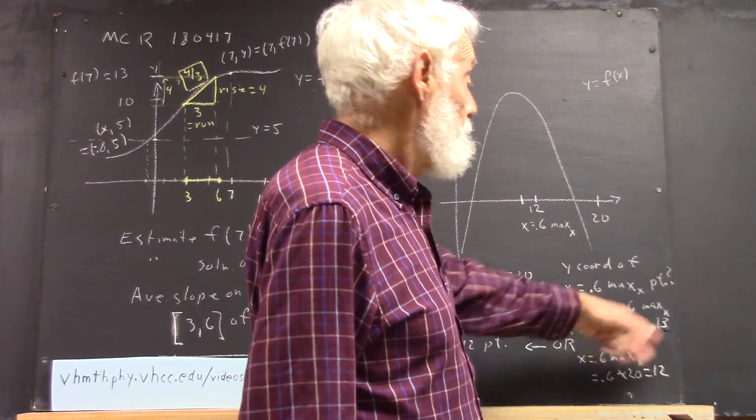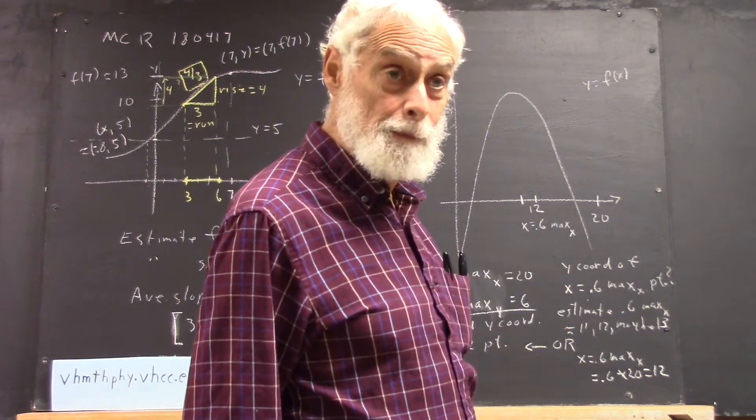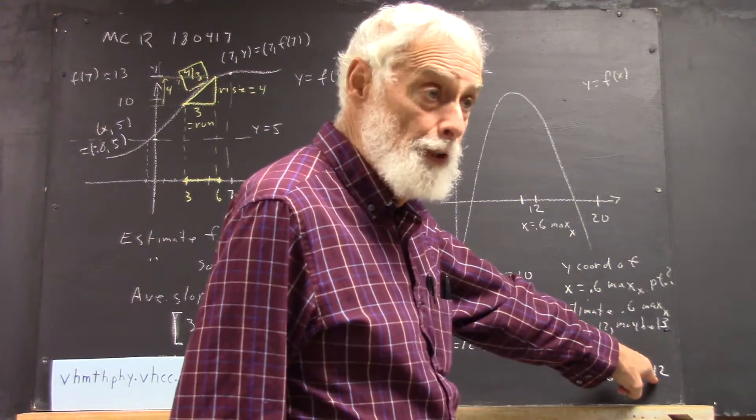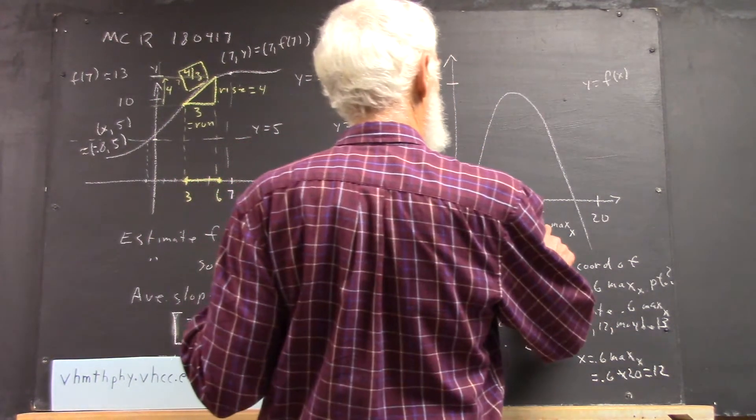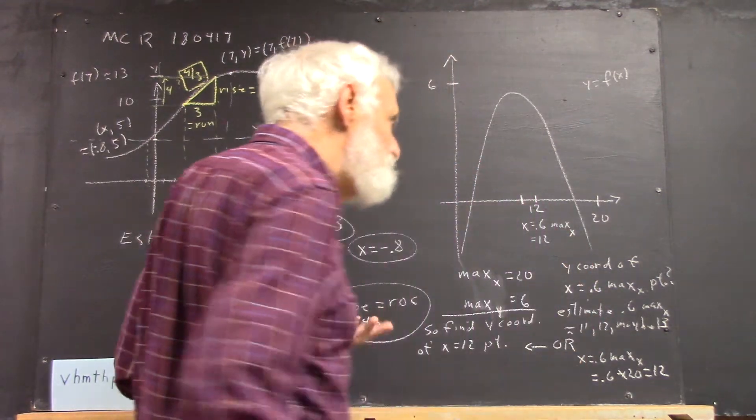If you used 11, 12, 13, I'd be okay with it. But it's easy to calculate with 12, so that's what I'm going to use. We use x equals 0.6 max of x, that is 12.